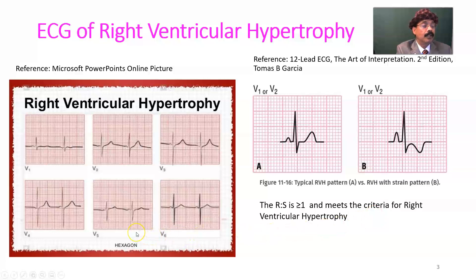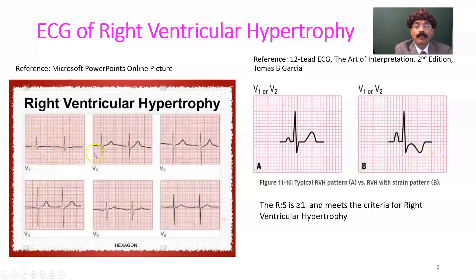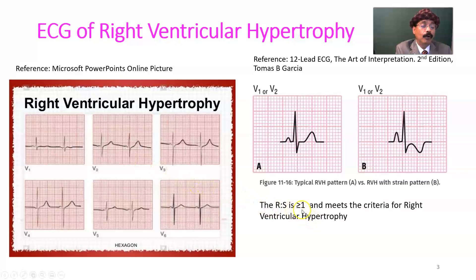Because the right side of the heart has some issue, we get a strain pattern. Looking at V1 and V2, R is greater than S, confirming right ventricular hypertrophy — the R-to-S ratio should be equal to or greater than one.